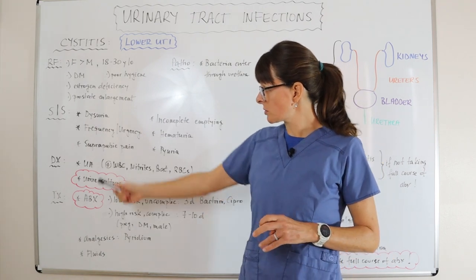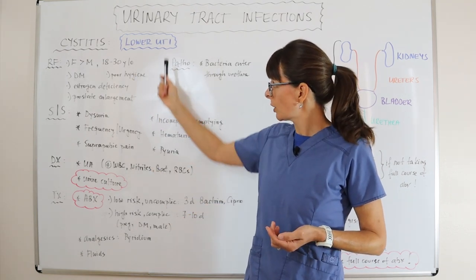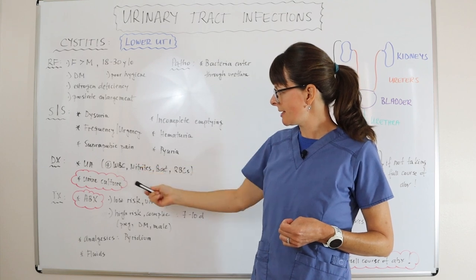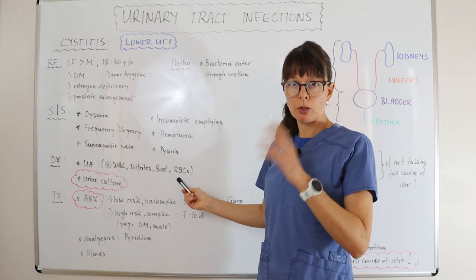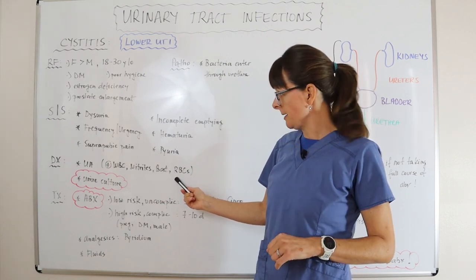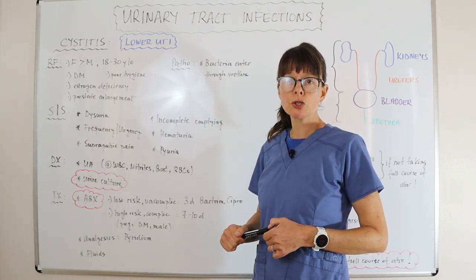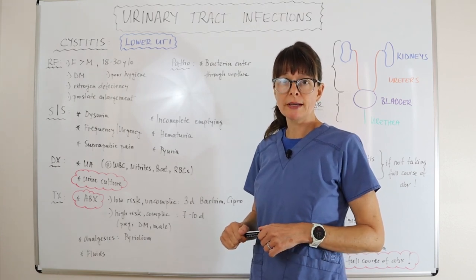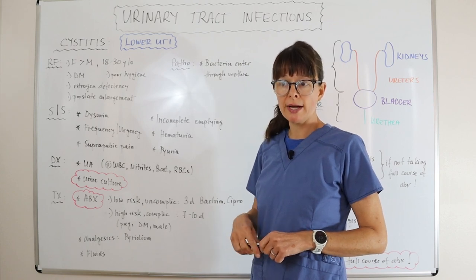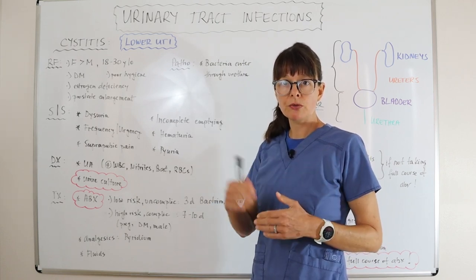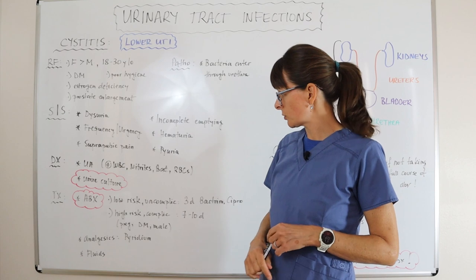For diagnostic tests, we want to check a urinalysis. If positive for cystitis or lower UTI, it will show positive white blood cells, nitrites, bacteria, and red blood cells whether microscopic or visible. We also want to send the urine sample for a urine culture to determine what type of bacteria is causing the infection. Very commonly we'll see E. coli in the urinary tract because of the proximity from the end of the urethra to the rectum.